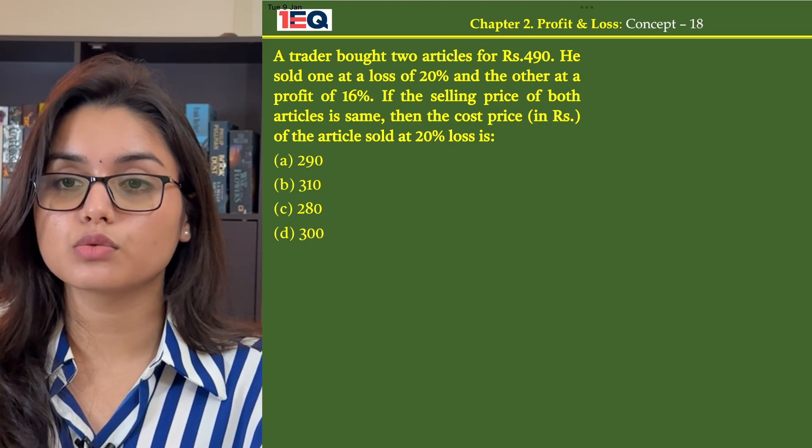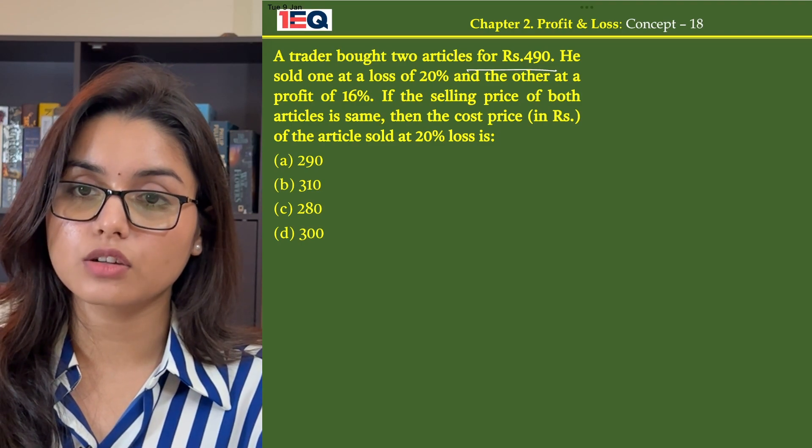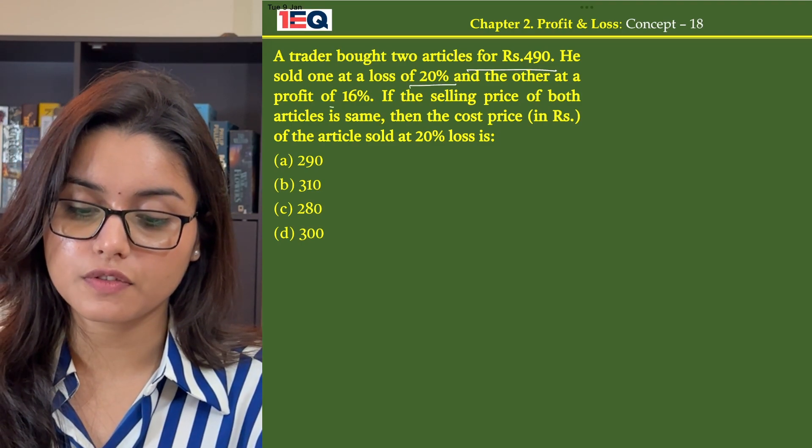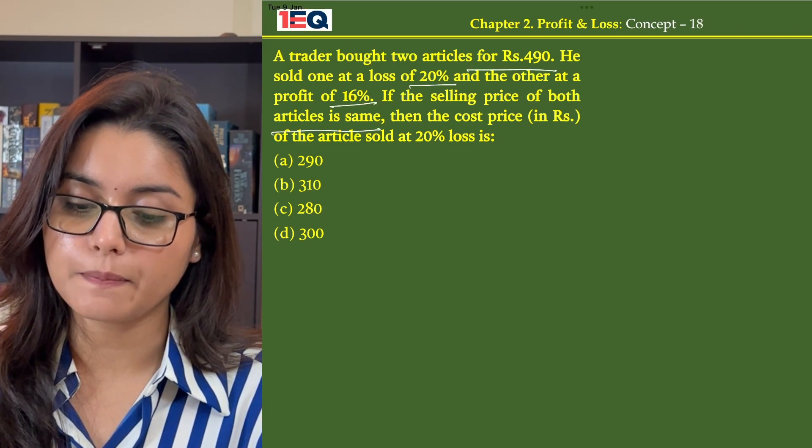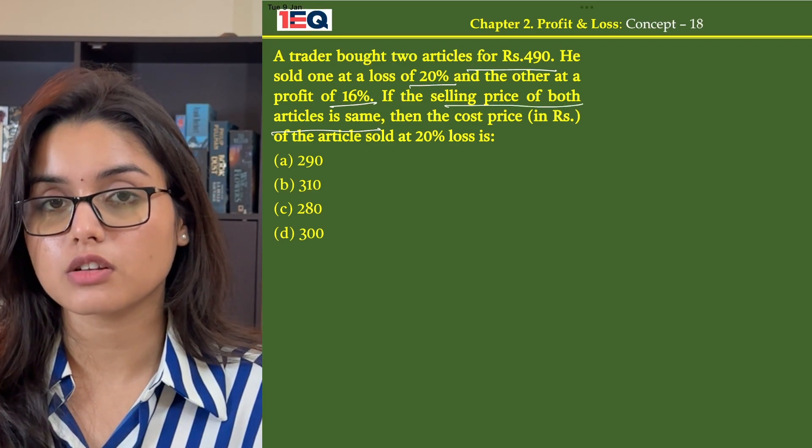A trader bought two articles for Rs.490. He sold one at a loss of 20% and the other at a profit of 16%. If the selling price of both articles is same, then the cost price of the article sold at 20% loss is.